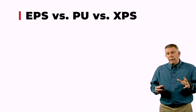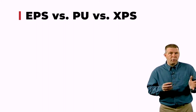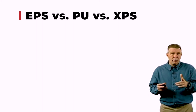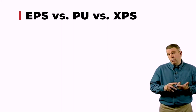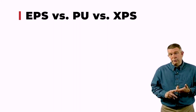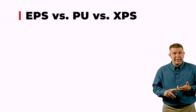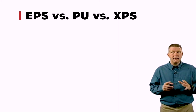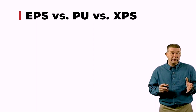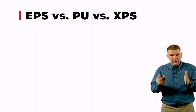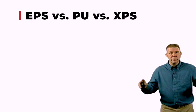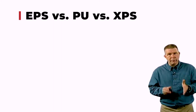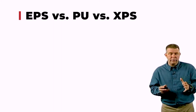Now let's compare the physical properties of different core materials — EPS, XPS, and polyurethane — which all have slightly different characteristics. Let's stick with the facts, leave the salesman's rhetoric out, and talk about how they really perform. We'll start with R-value — everybody thinks of R-value as the end-all be-all for energy efficiency. As a SIP builder, hopefully you understand it's just as much about air tightness as it is about R-value.